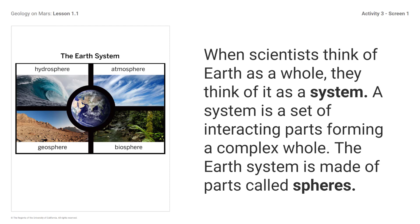The Earth system is made of parts called spheres, and it has four of them. The atmosphere is the mixture of gases surrounding a planet. The hydrosphere is all the liquid water and ice on a planet. The geosphere is the solid part of a rocky planet. The biosphere is all the living things on a planet.